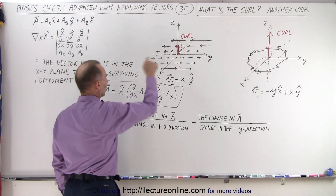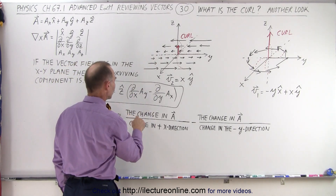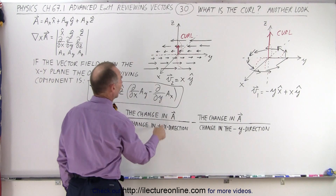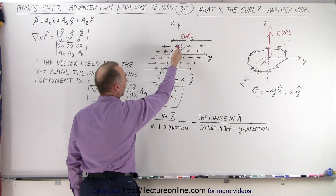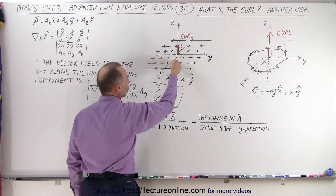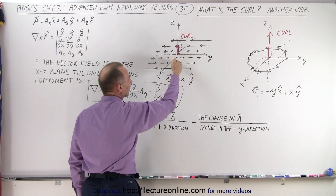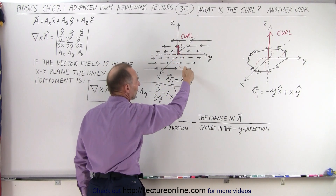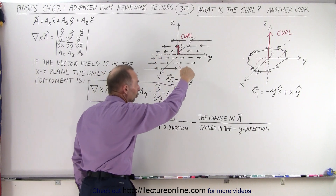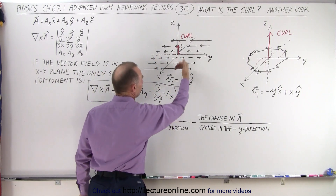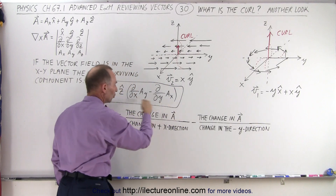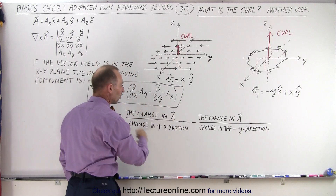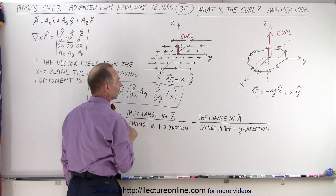Let's apply that to the first vector field. Starting at the origin, we change in the positive x direction, and notice that the change in the vector field is in a counterclockwise direction — that is a curl. If we take our fingers and point them in that direction, our thumb points in the positive z direction, so this is a contributing term in this vector field.